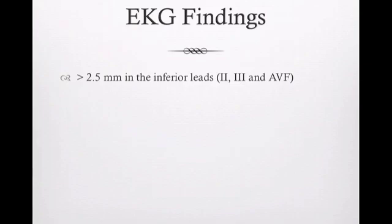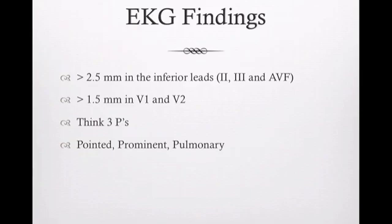Diagnosing right atrial hypertrophy is pretty straightforward. You're looking at your inferior leads - two, three, and aVF - and counting the height of the P wave. If it's greater than 2.5 millimeters, you have diagnostic right atrial hypertrophy. Or you're looking in V1 and V2, your right precordial leads, at a P wave that's 1.5 millimeters. Just like in ventricular hypertrophy you look at QRS complexes, for atrial hypertrophy you're looking at P waves. For right atrial hypertrophy, think of the three P's: pointed, prominent, and pulmonary.